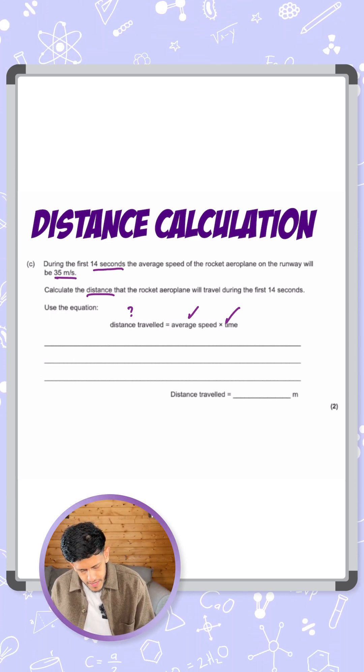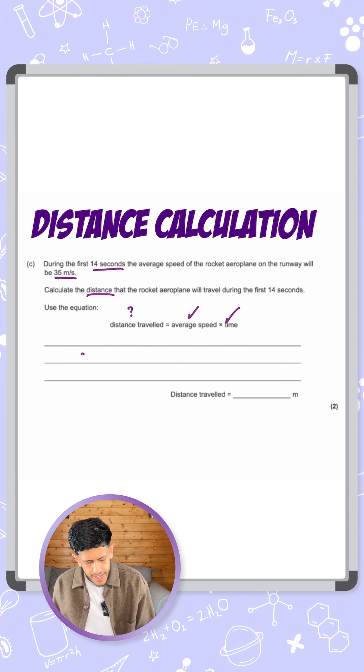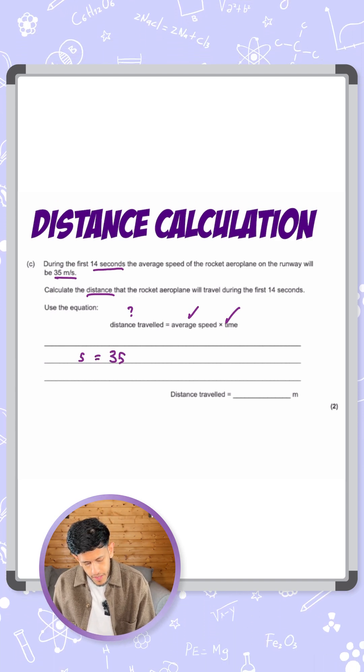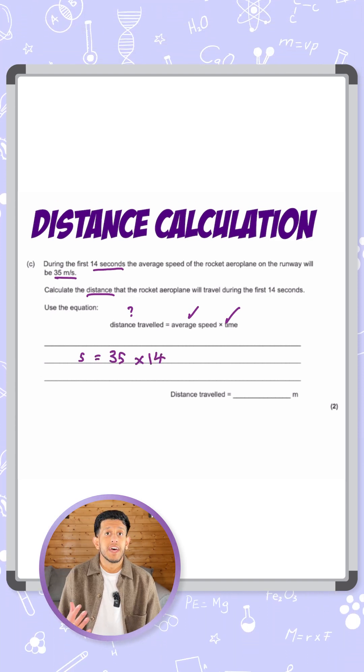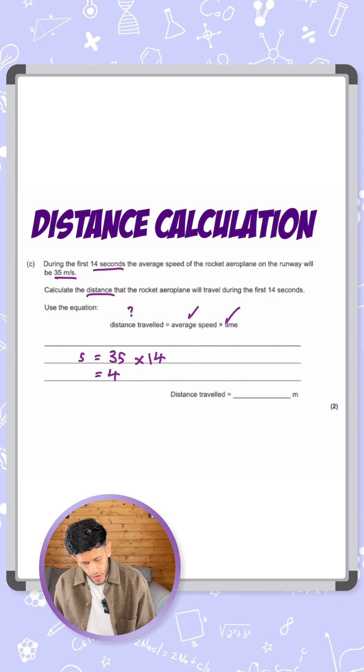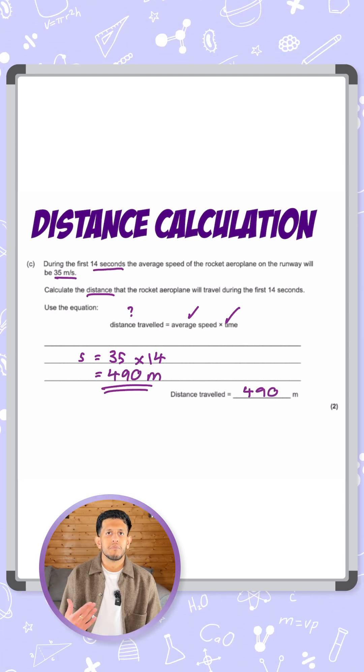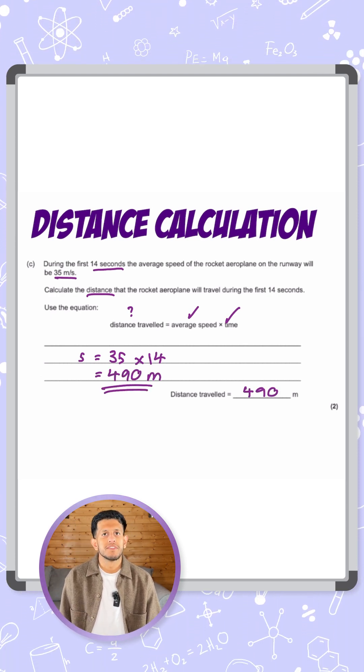So now I'm just going to substitute the numbers in. So distance, I can give the letter S equals the speed times time. So that's 35 multiplied by 14. And that's going to give me a value of 490 meters. So there we are one mark for doing the multiplication and one mark for the answer.